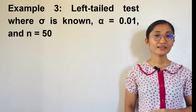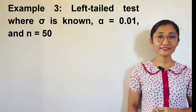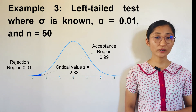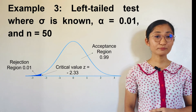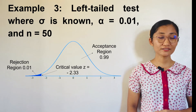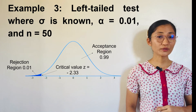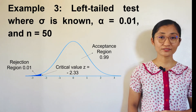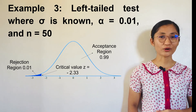Example 3: Left-tailed test where sigma, or population standard deviation, is known; alpha equals 0.01 and n equals 50. A one-tailed test with 0.01 significance level has 1% of the area under the curve in the rejection region and 99% in the acceptance region. Since sigma is known, we use the Z-score. This is a left-tailed test, so we expect a negative critical value: Z equals negative 2.33. Therefore, the rejection region is Z less than or equal to negative 2.33.